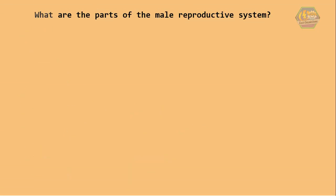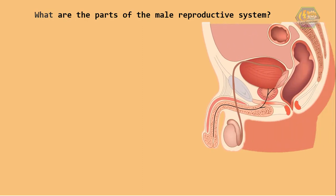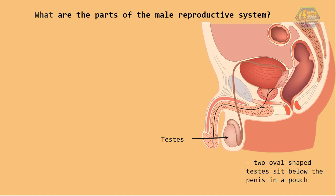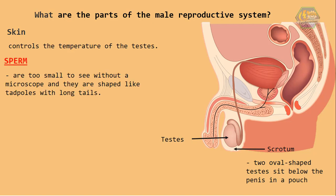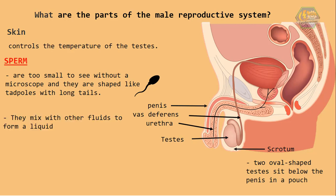What are the parts of the male reproductive system? In men, the main reproductive organs are the testes. The two oval-shaped testes sit below the penis in a pouch called the scrotum. This is a skin that constantly controls the temperature of the testes. If you are a boy, you can notice them move on their own. The testes make the male sex cells called sperm. Sperms are too small to see without a microscope and they are shaped like tadpoles with long tails. The sperm travel through a tube called vas deferens to the urethra and then towards the penis. They mix with other fluids to form a liquid called semen.